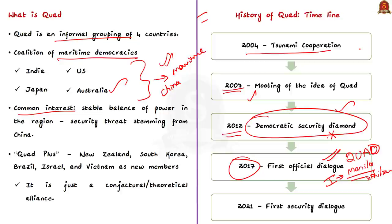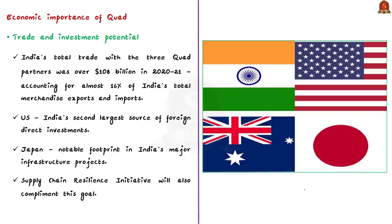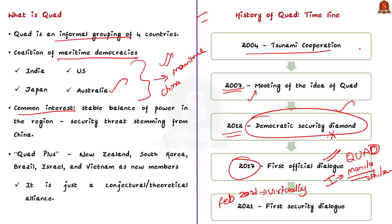The last ministerial level talk was in February 2021 and was held online. The talk happening tomorrow will be a physical meeting, and our Prime Minister has gone to the United States to attend. Recently, the Quad process has expanded to include more countries under the term Quad Plus, including New Zealand, South Korea, Brazil, Israel, and Vietnam, but this is still in a theoretical phase.